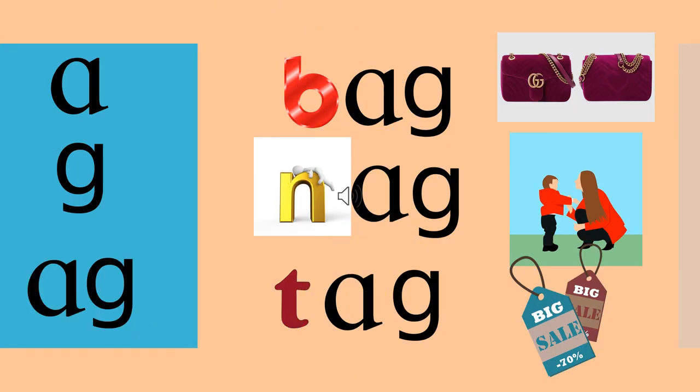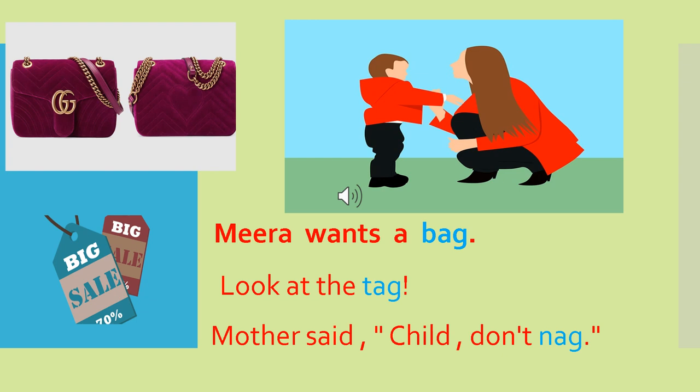A - G - Ag. A - G - Ag. B - Ag - Bag. N - Ag - Nag. T - Ag - Tag. Once more: B - Ag - Bag. N - Ag - Nag. T - Ag - Tag. Let's read together: Meera wants a bag. Look at the tag. Mother said, child don't nag.